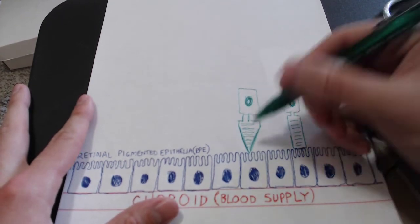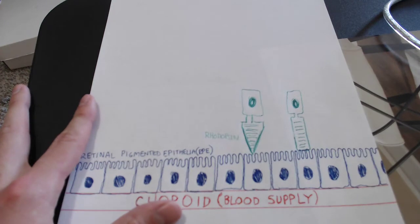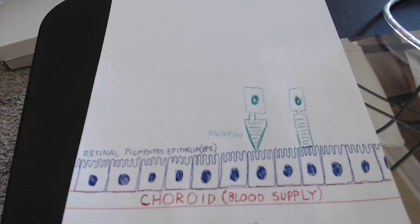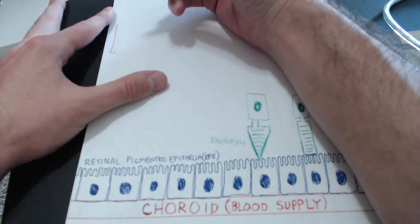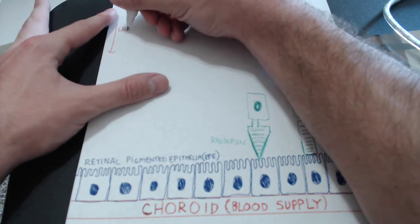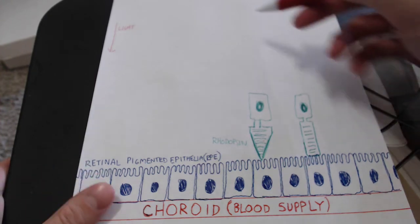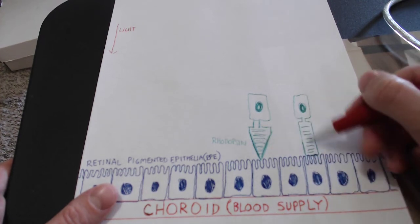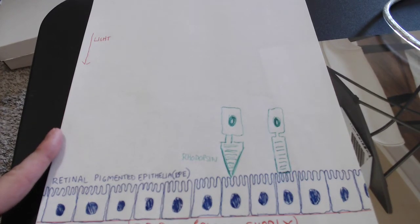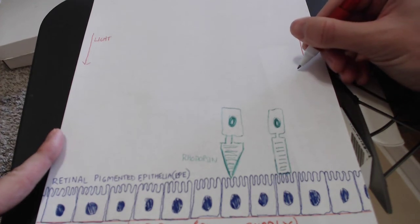These photoreceptor cells — specifically those rhodopsin pigments found in the outer segment — are going to absorb light coming from the most anterior part of the retina, from the cornea, lens, and pupil. So light comes in from the anterior segment of the eye and is directed towards the most posterior segment, stimulating these photoreceptor cells. Those rhodopsin molecules absorb that light, and then the electrical signal — in terms of neurotransmitter release and action potentials — travels in the opposite direction that the light came from.